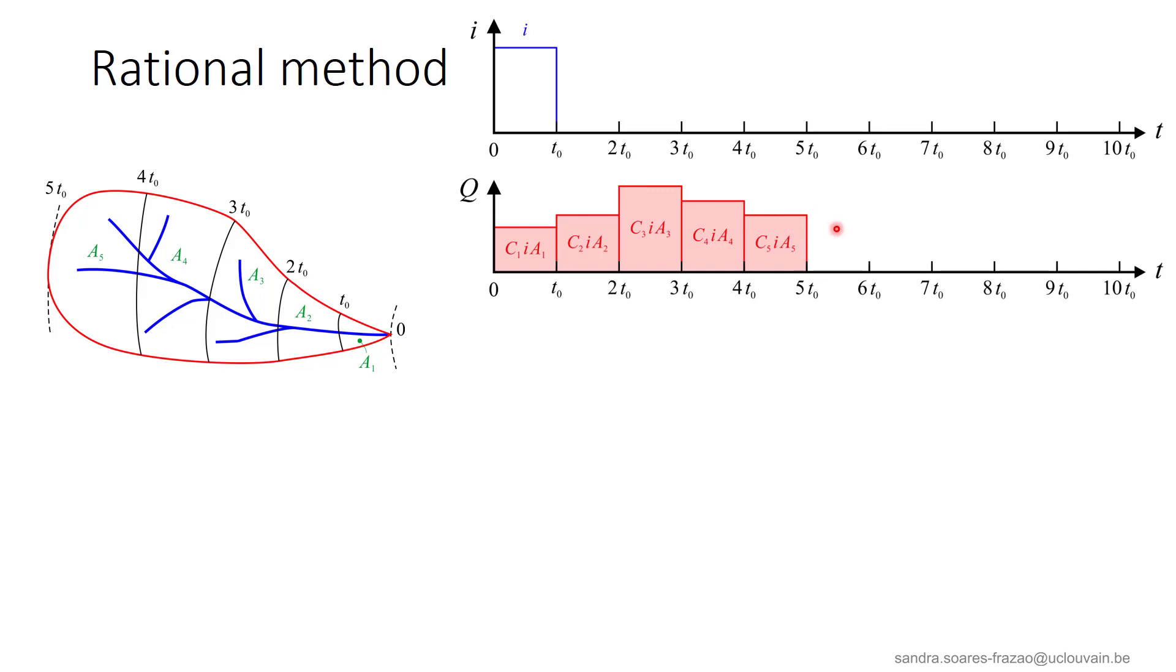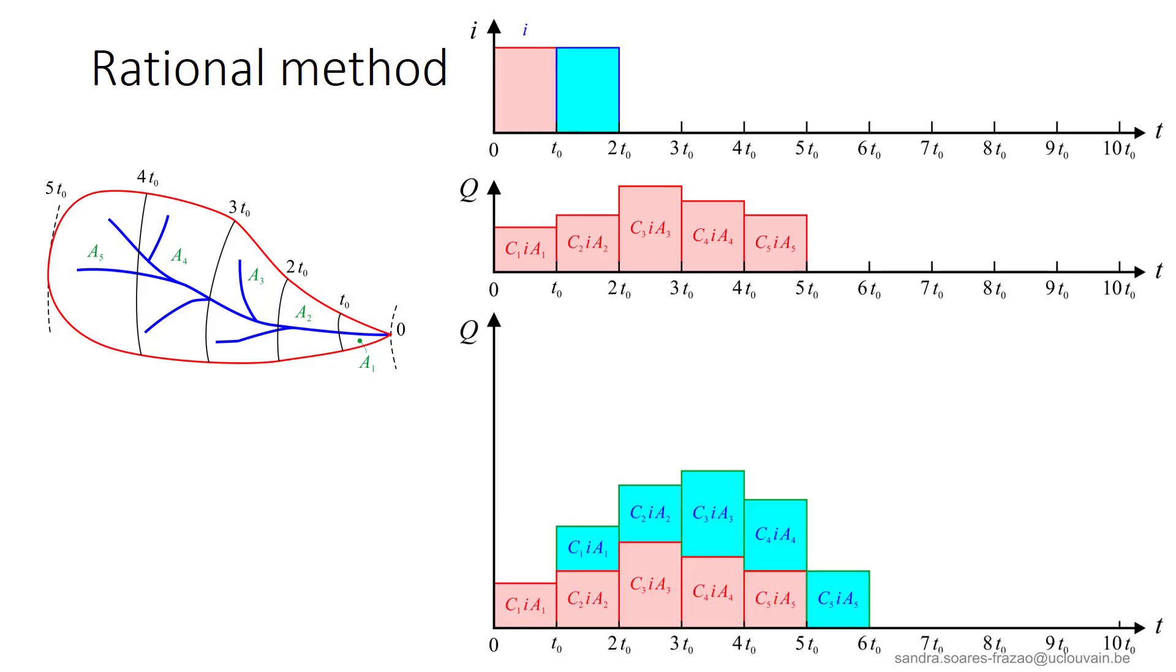The maximum discharge is of course different for each subcatchment, as the runoff coefficients and the subcatchment areas are different. If the rain lasts 2 times T0, with the same intensity, we can construct the resulting schematic hydrograph by adding the blue rectangles to the red ones, with a delay of T0.